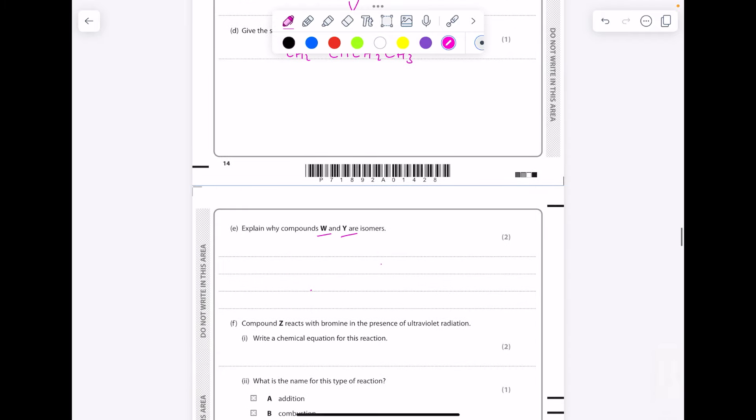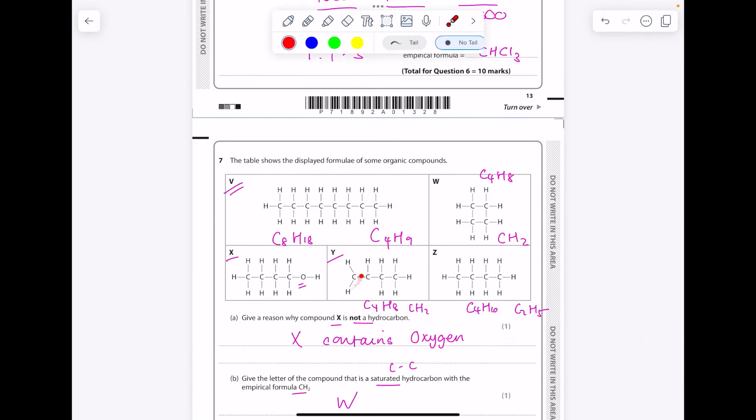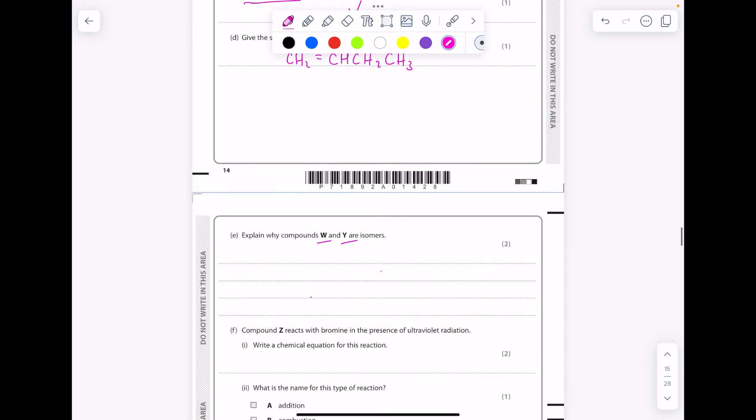Explain why W and Y are isomers. So having a look at W and Y, we can see that they have the same molecular formula but different displayed formulas, which is our definition.